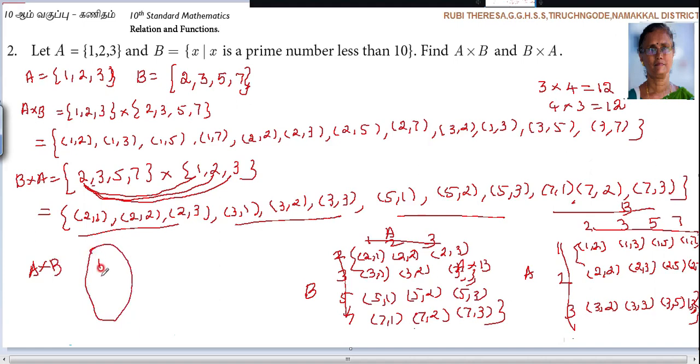Otherwise, with the help of the arrow diagram also, very well you can find it out. A cross B. What is A? 1, 2, 3. What is B? 2, 3, 5, 7. A, B. So, this is paired with. 1 is paired with. So (1,2), (1,3), (1,5), (1,7).